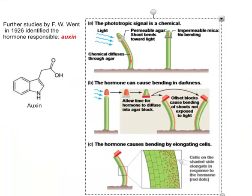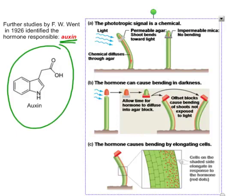Further experiments were done by F.W. Went in 1926, and he was able to identify a hormone called auxin — here's a chemical picture of it. A hormone is simply a chemical that is produced in one portion of an organism, travels to another portion, and has an effect. He proved once again that the signal is a chemical, and that if you have a permeable barrier between the tip and the rest, it'll work — permeable agar: it bends.